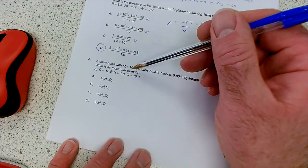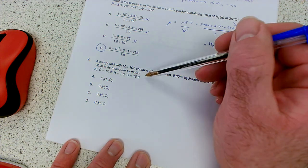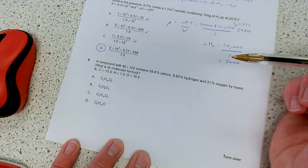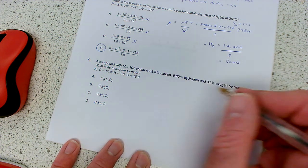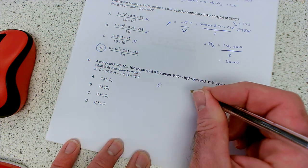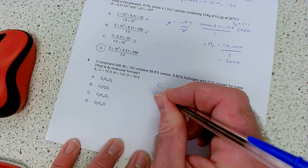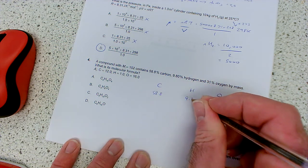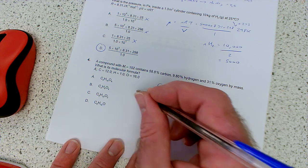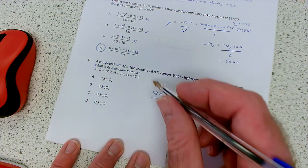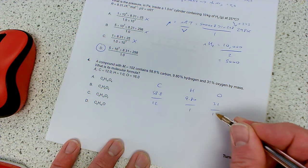Number 4, a compound with MR 102 contains 58.8% carbon, 9.8% hydrogen, 31% oxygen by mass. What is its molecular formula? Now remember, we don't have a calculator, so we're not going to be getting precise values, we just need approximations. So the way we carry the empirical formula out is we create a column for each element, and then we take the mass or percentage, whatever we're given. Really, we need masses, but you can just pretend the percentage is a mass, and it doesn't matter. We divide that by the relative atomic mass from the periodic table, so divide that by 12, divide that by 1, divide that by 16.